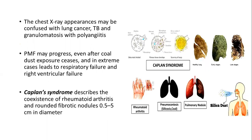On chest X-ray, coal workers' pneumoconiosis with progressive massive fibrosis shows mass-like lesions that can be confused with lung cancer, tuberculosis, and granulomatosis with polyangiitis. Even after coal dust exposure ceases, progressive fibrosis may continue and in extreme cases leads to respiratory failure and right ventricular failure. You should also know Caplan syndrome: the coexistence of rheumatoid arthritis with rounded fibrotic nodules on chest X-ray.